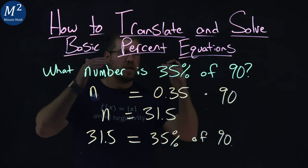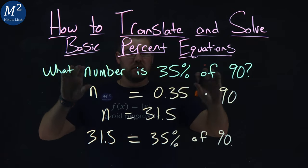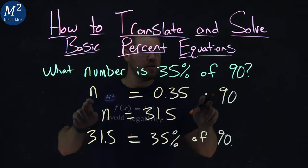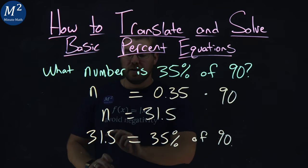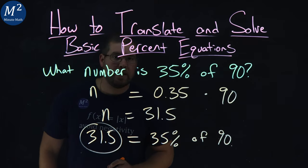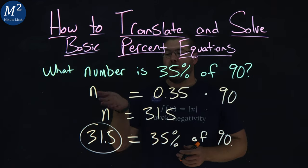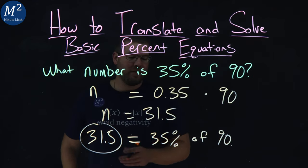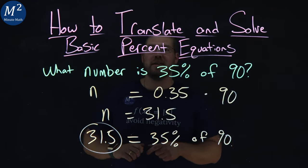When you break it down, take the written expression statement into an equation, it makes it a lot easier to solve and find that number right there. So there you have it. 31.5 is 35% of 90.